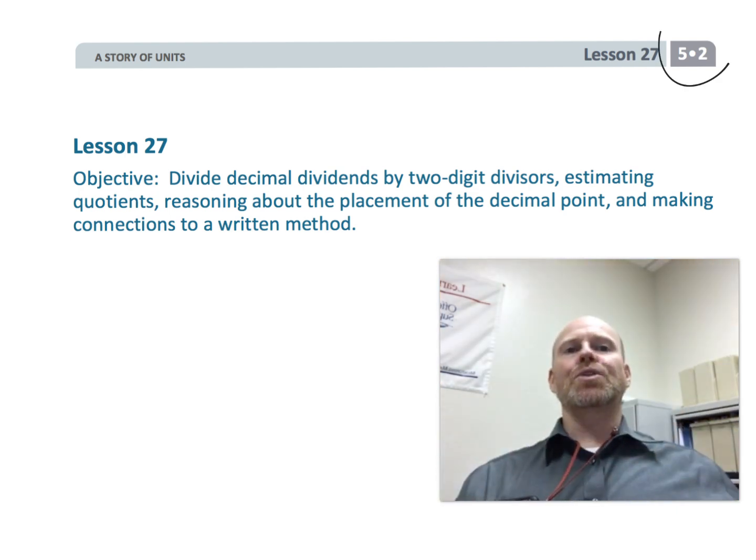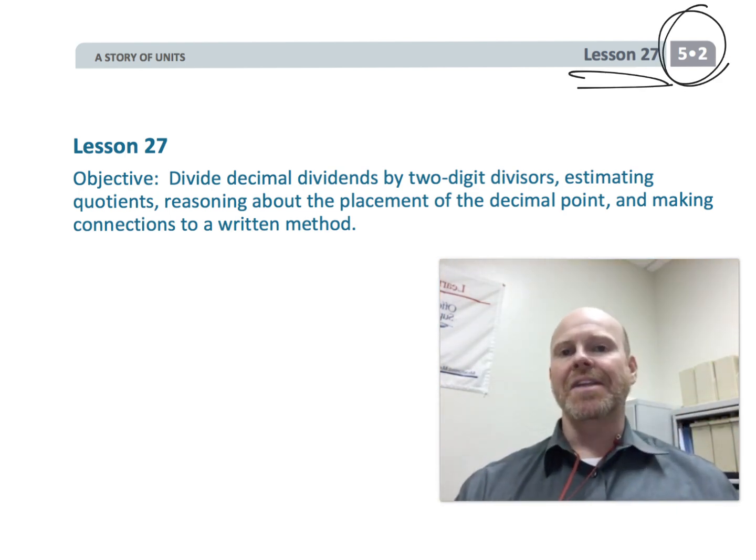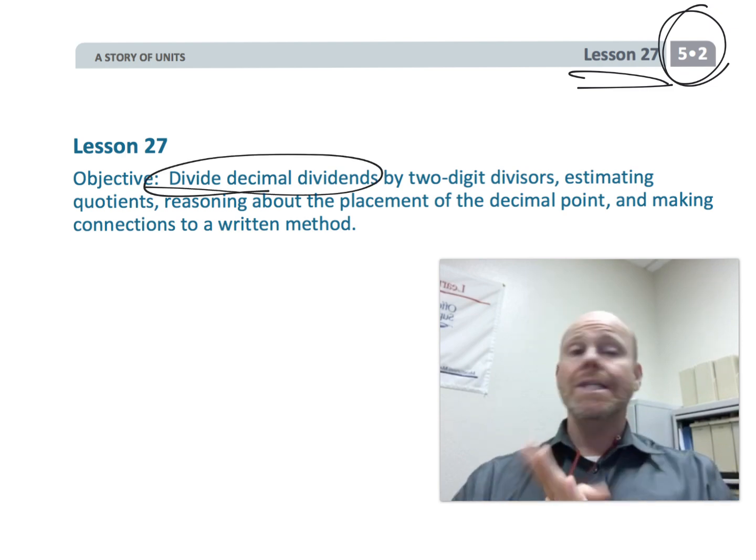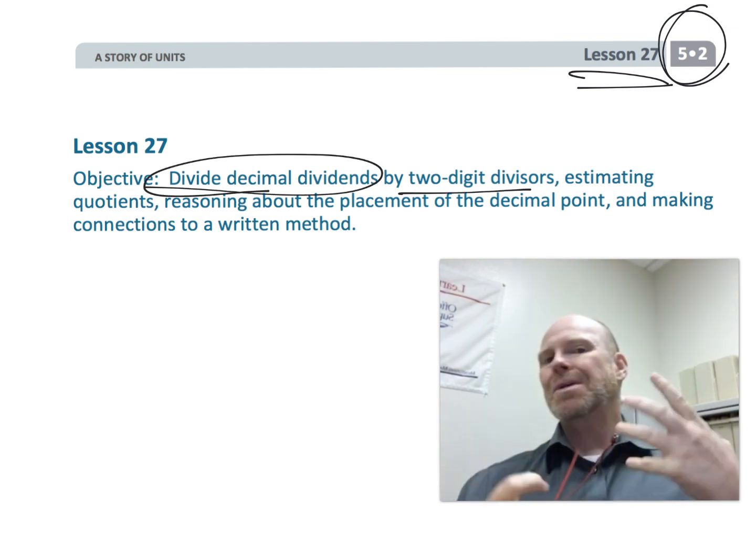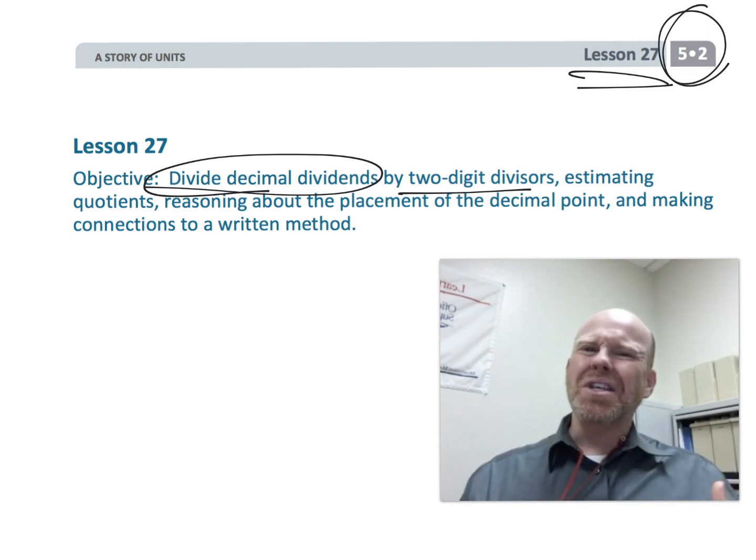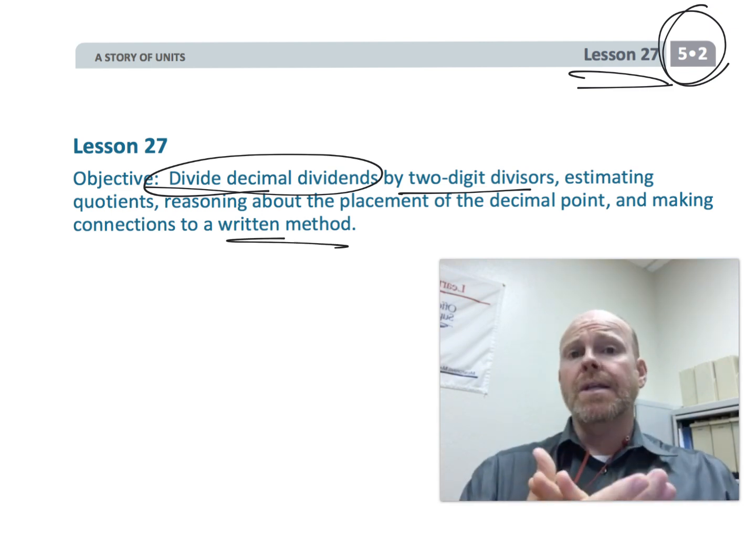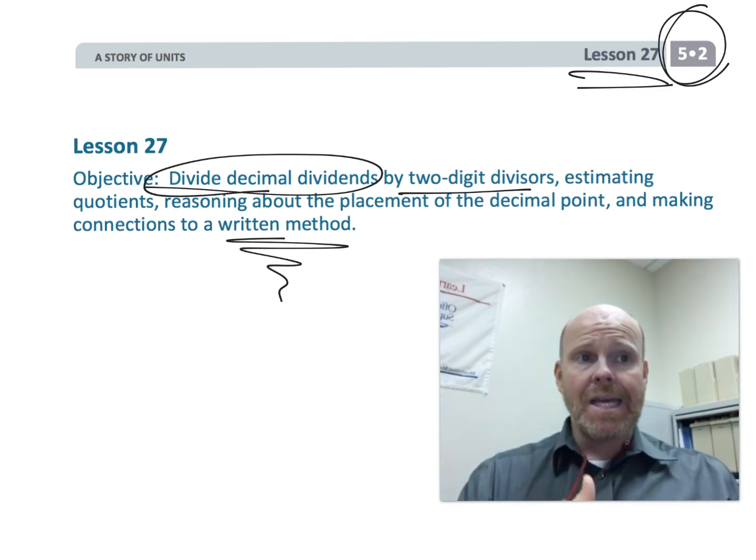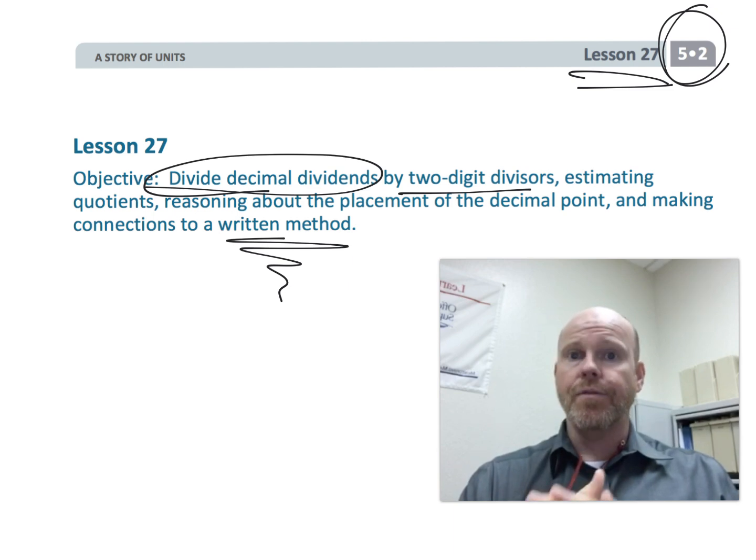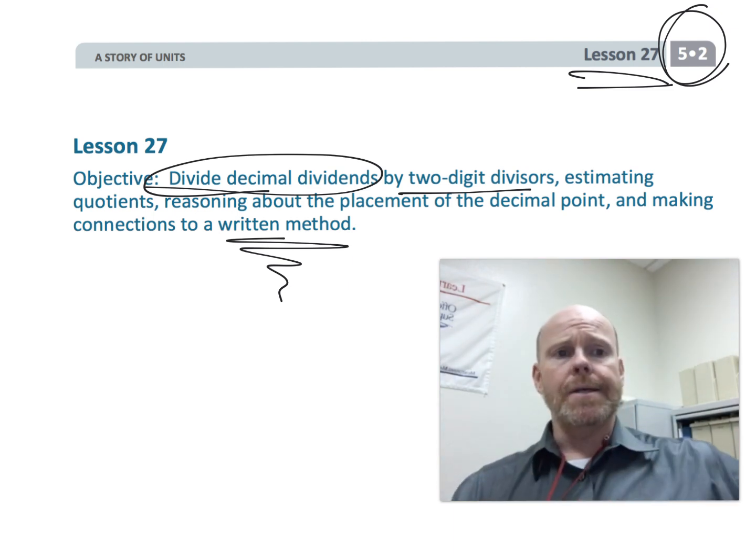All right, this is fifth grade module two, lesson 27. In this lesson students are going to be dividing decimal dividends by two-digit divisors. We're going to be using estimation. Essentially though, students at this point in the game are going to be using that standard algorithm for dividing decimals. Let's get working on this.